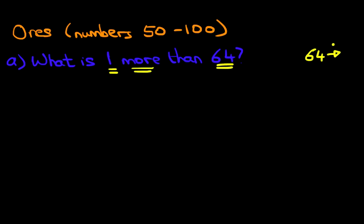So let's put a dot here. We're going to count forwards from number 64. The number after 64 is 65. So let's write that down: 65. That is correct.